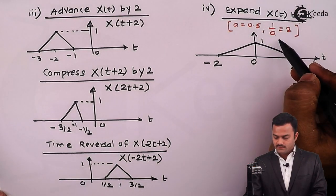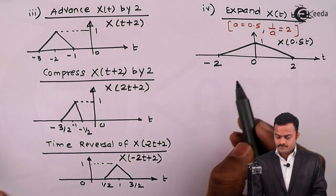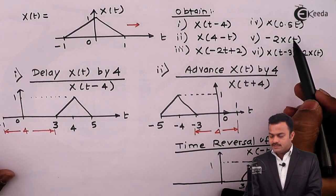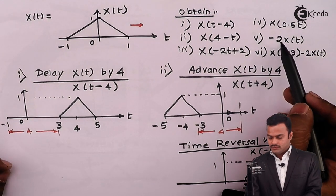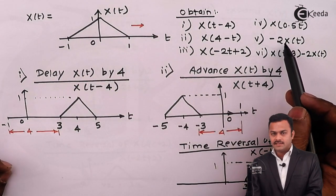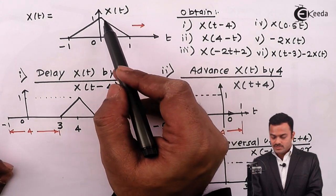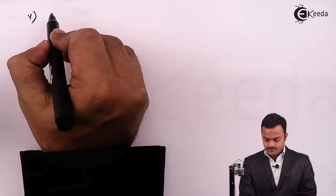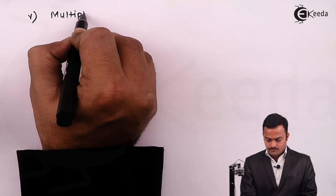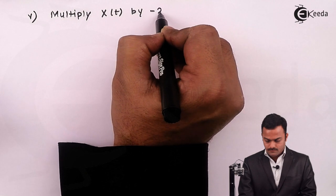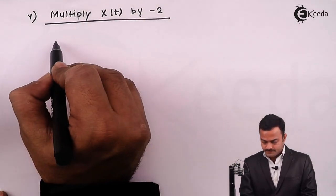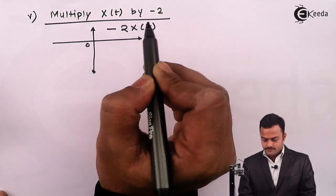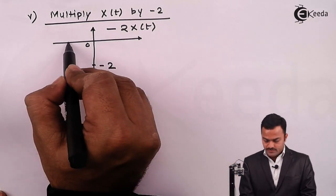Next is minus 2X of t. Here we are not changing the t part but changing the amplitude. Multiplying by minus 2 changes the y-axis value: instead of 1 it becomes minus 2. That is the only change. So we get a signal with the same span of minus 1 to 1, but with a magnitude of minus 2. This is minus 2X of t.